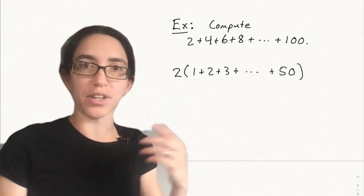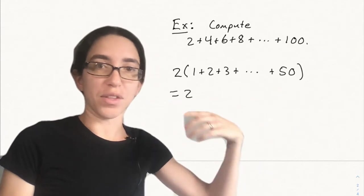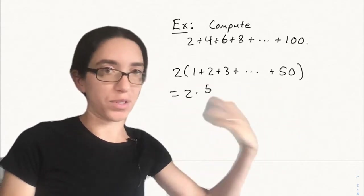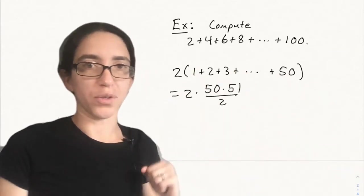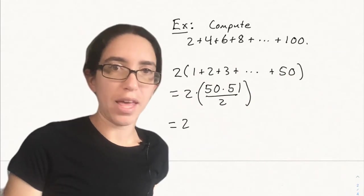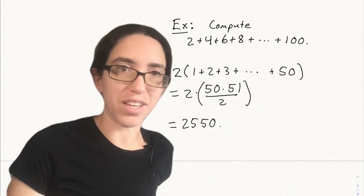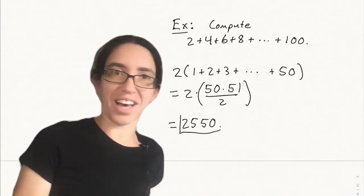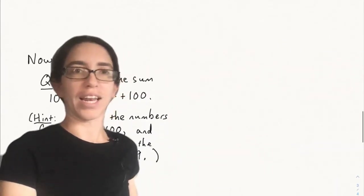So if you factor out a two, you get two times the sum of the numbers from one up to 50. And the sum of the numbers from one up to 50 by Gauss's formula is 50 times 51 divided by two. Now the twos cancel in this multiplication problem, and we just get 50 times 51, which is 2,550, which is a quite efficient way of adding up all the even numbers. You can similarly add up multiples of three or any number.